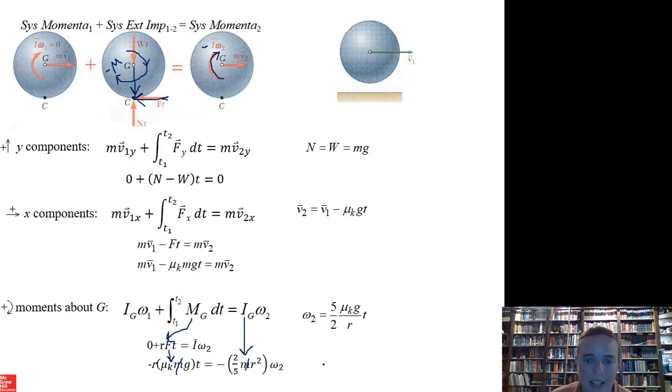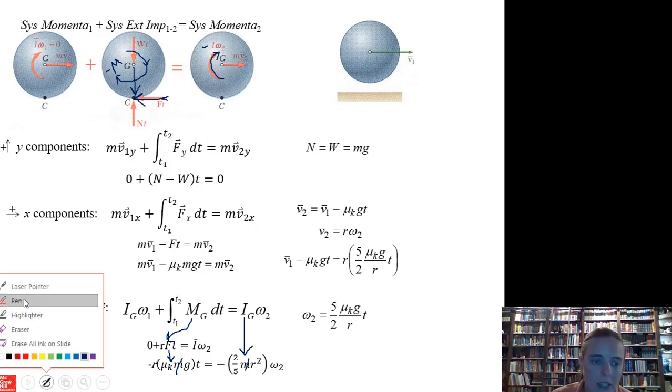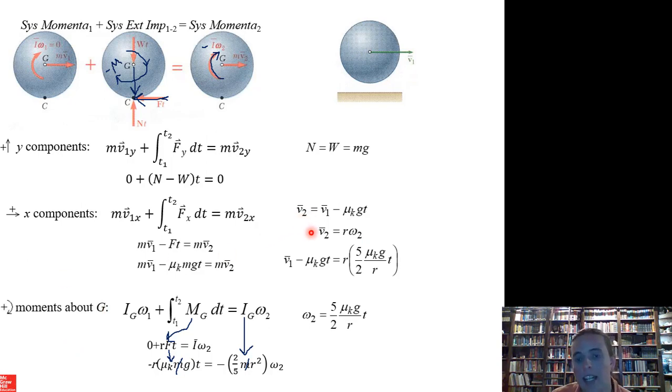What should we do next? We have something with velocity, something with ω, we need time out of this. Let's throw that kinematics equation in. At the very end, when this thing is not sliding anymore, the linear velocity and angular velocity will be related to each other. v equals r ω. We can take this relationship and start substituting.